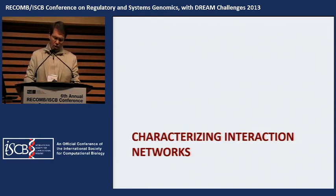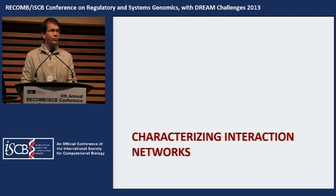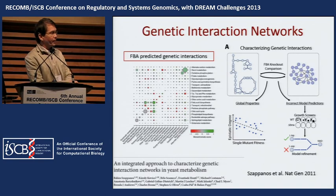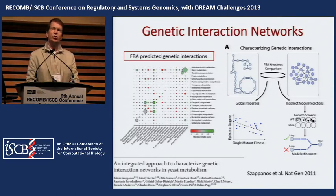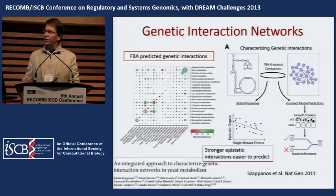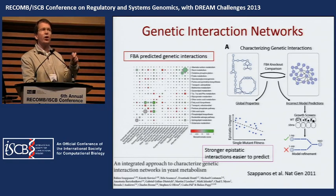That leads into characterizing interaction networks. People at Toronto — Brenda Andrews, Charlie Boone, and so forth — have generated large screens of dual knockouts in yeast to look at gene-gene interactions. A couple of years ago, a group including Andrews, Boone, and Steve Oliver tried to interpret the output of these gene-gene interaction screens using the genome-scale metabolic model for yeast. The model was surprisingly successful in predicting the measured interactions between genes, providing a mechanistic basis for why those genes are interacting in the organism.